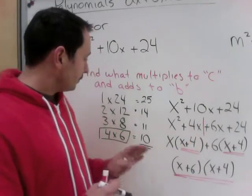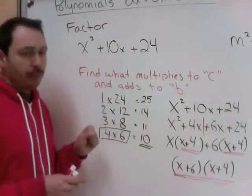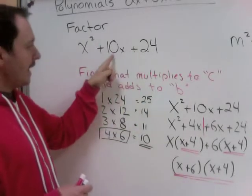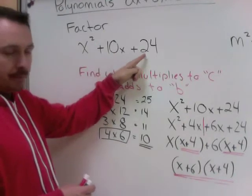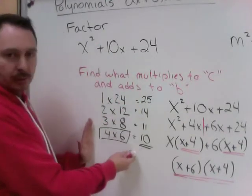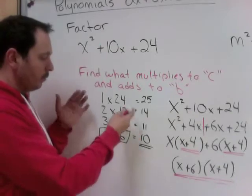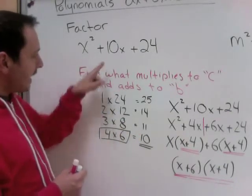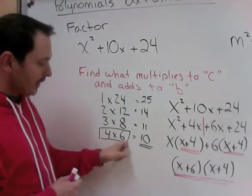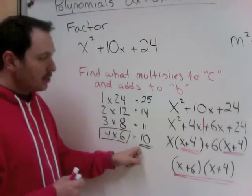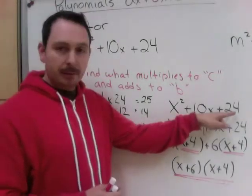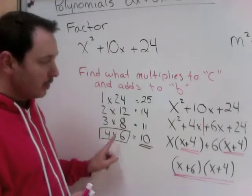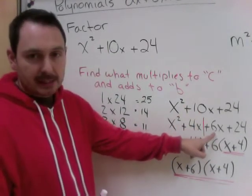The way this is always going to work is, you're looking for two numbers that multiply to the c and add to b. So, I took my 24 and I found all my what multiplies to get 24. And I figured, which ones added to my b? Which added to 10x? Well, 4 and 6 added to 10. So, I took my original problem and I split the middle piece up into the two numbers I found. 10x is 4x plus 6x.